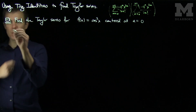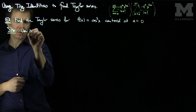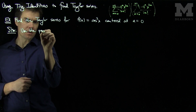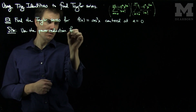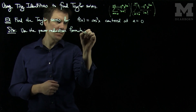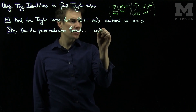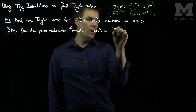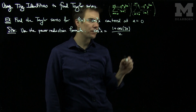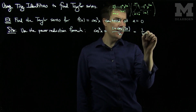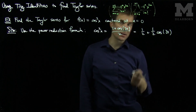Rather, what we can do is use the double angle formula or the power reduction formula. Using the power reduction formula, cos²(x) = (1 + cos(2x)) / 2, which is 1/2 + (1/2)cos(2x).